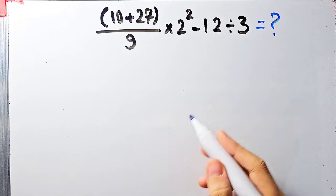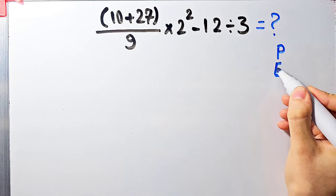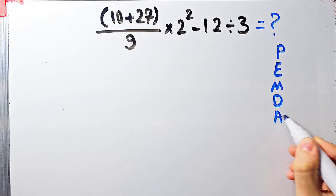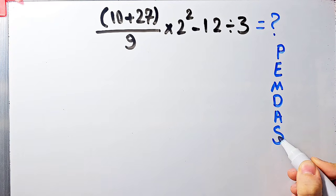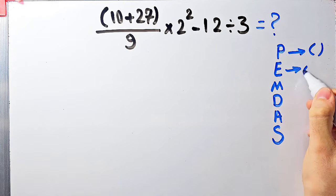To solve this question we need to follow the order of operations, which is PEMDAS. PEMDAS shows the priority of mathematical operations, and if you don't pay attention to this rule you get the wrong answer. P stands for parentheses, E stands for exponent.